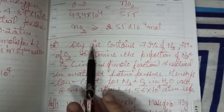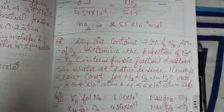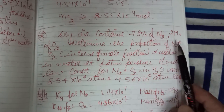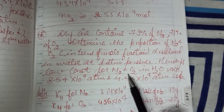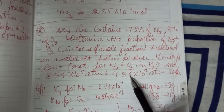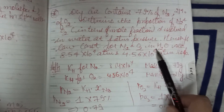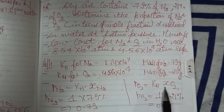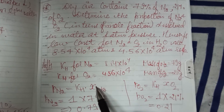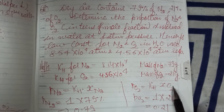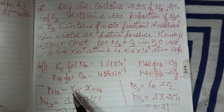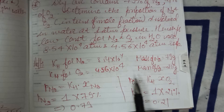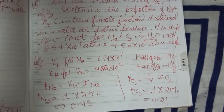Next question: dry air contains 79% nitrogen and 21% oxygen. Two gases are given — nitrogen and oxygen. We need to find the mole fraction of nitrogen and oxygen. Henry constant is given for both: for nitrogen, kH = 8.54 × 10⁴, and for oxygen, kH = 4.56 × 10⁴.